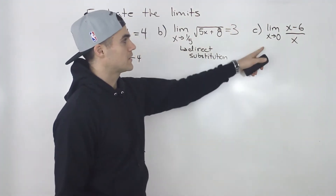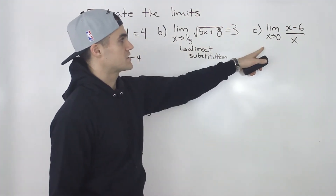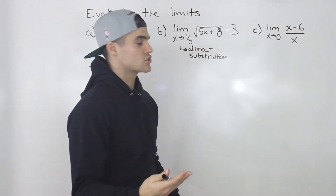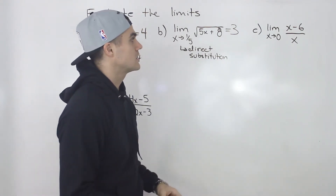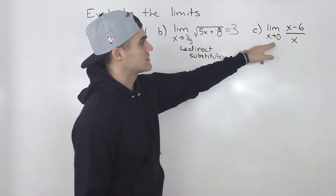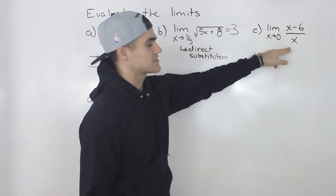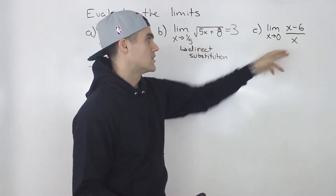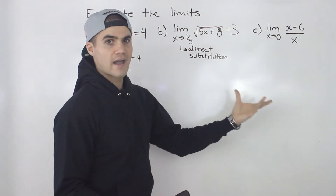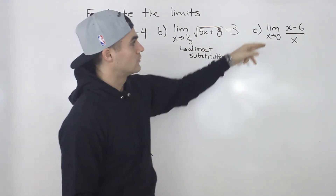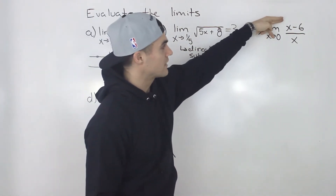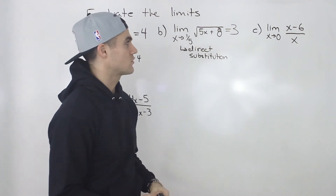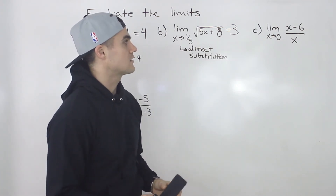Moving on to the next one: the limit as x approaches 0 of (x minus 6) over x. First thing you want to check — can you make a direct substitution? In this case, if we plug in 0 for x, the denominator will be 0. So the next thing you want to check is: can you factor? Notice you can't factor the numerator and you can't factor the denominator, so we're not in a really good place here.